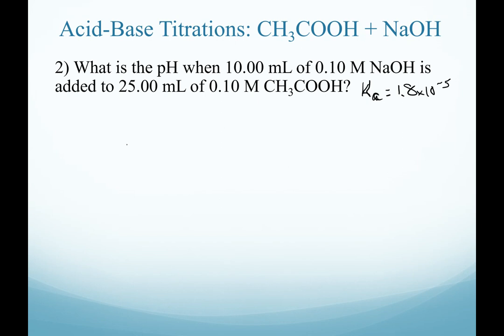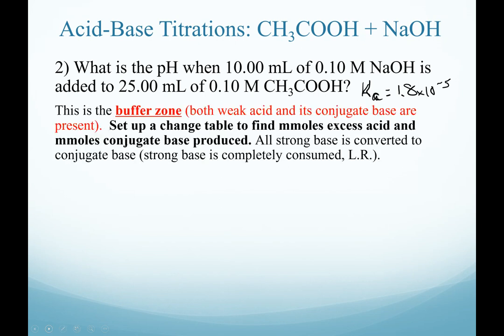When we did our beaker drawing and set up for this series of pH calculations, we did the beaker drawing for this region in our titration. Realize that we have excess acid and sodium hydroxide is our limiting reagent. I also asked you to set up your change tables for this one, and so to save a little bit of time, you should have the following setup.